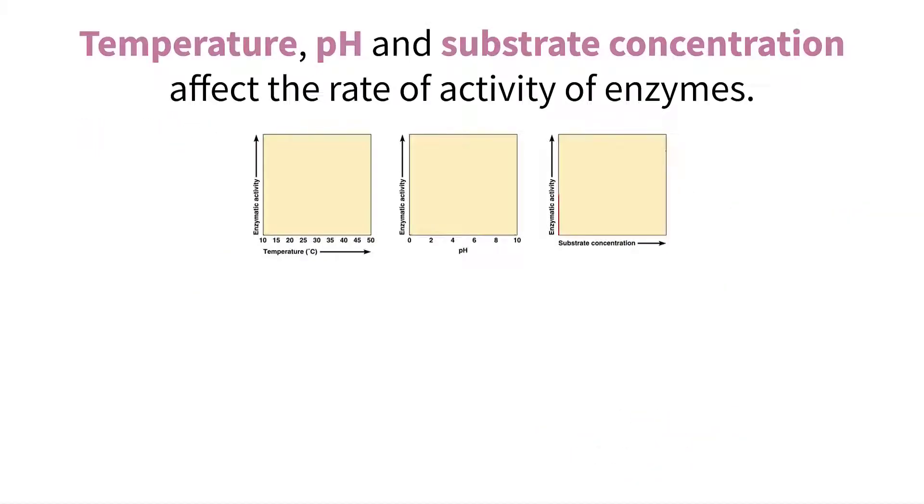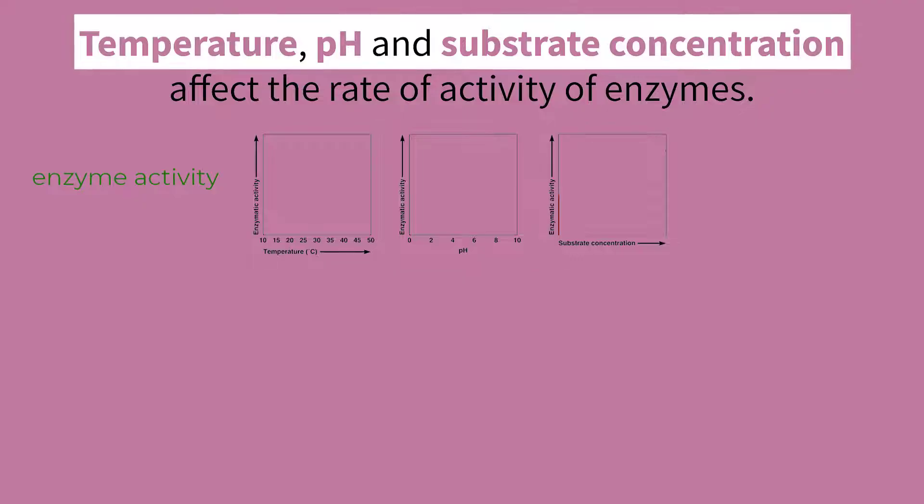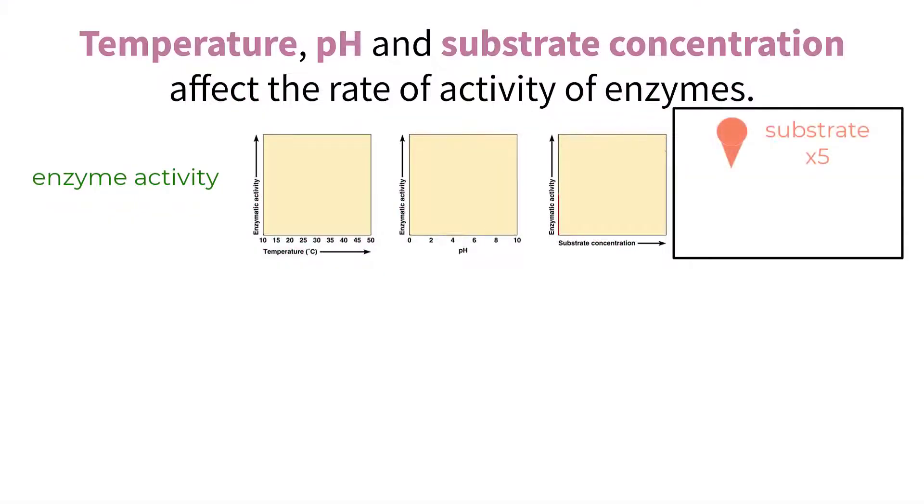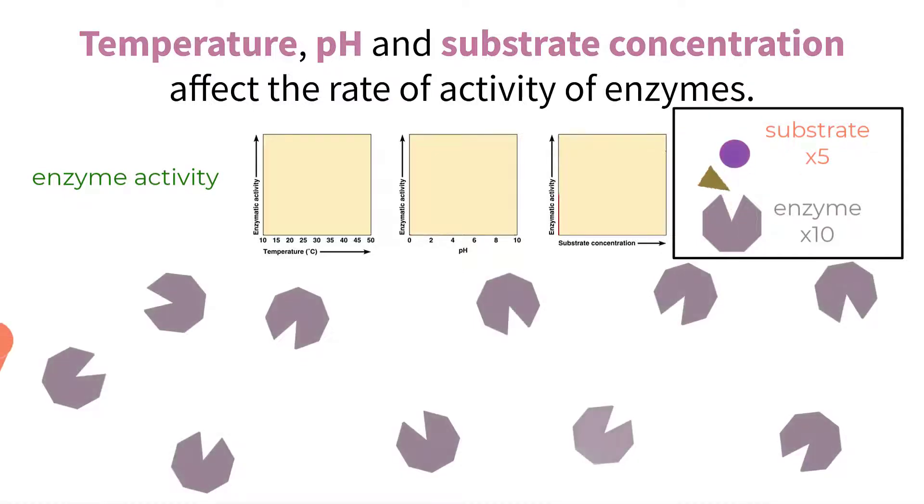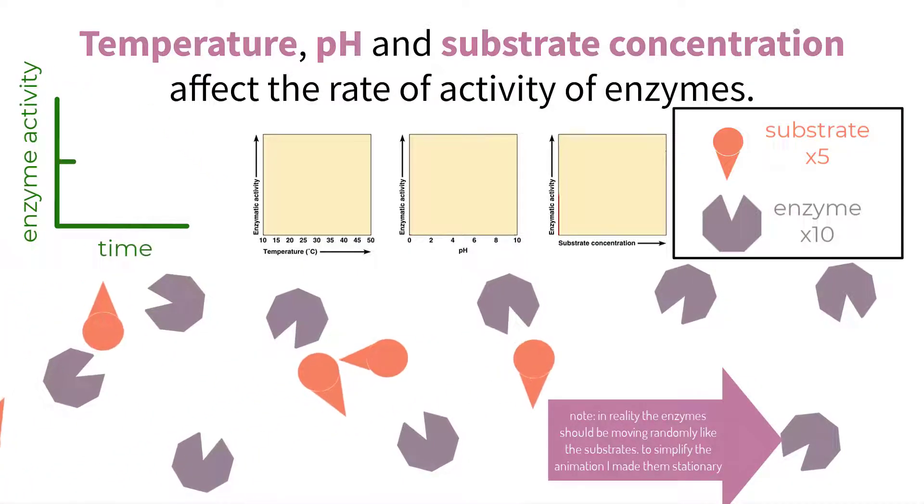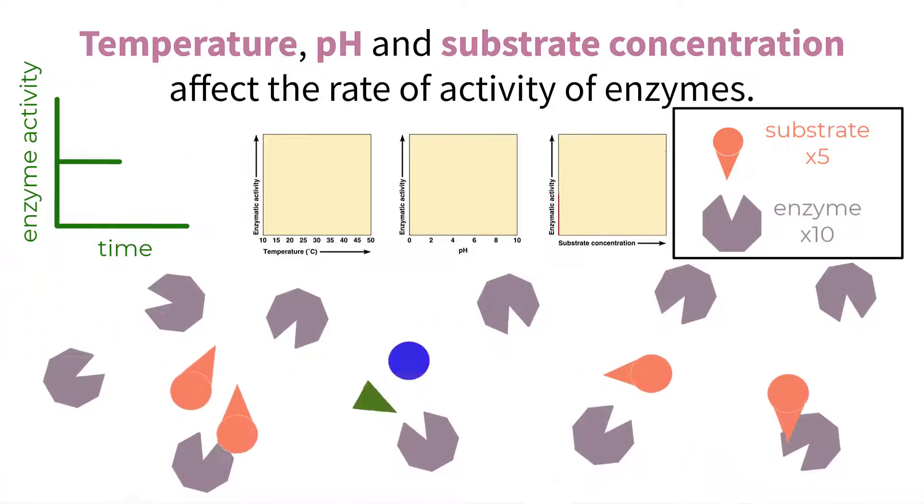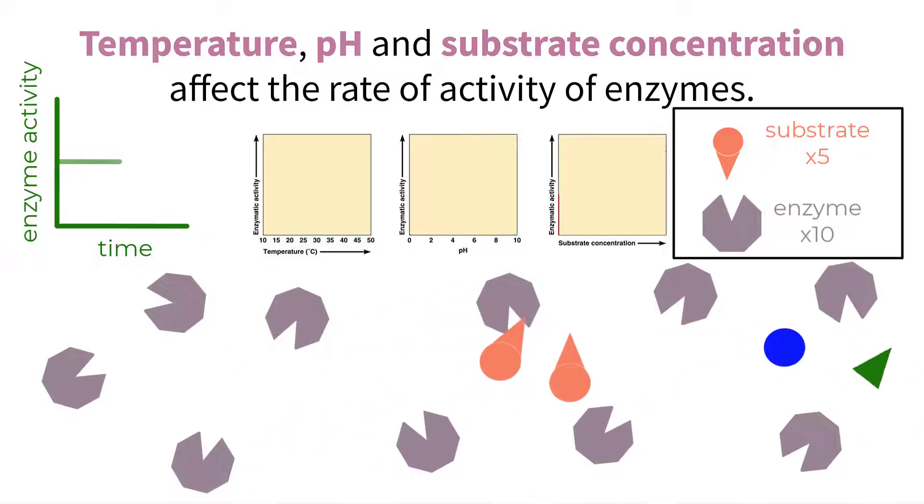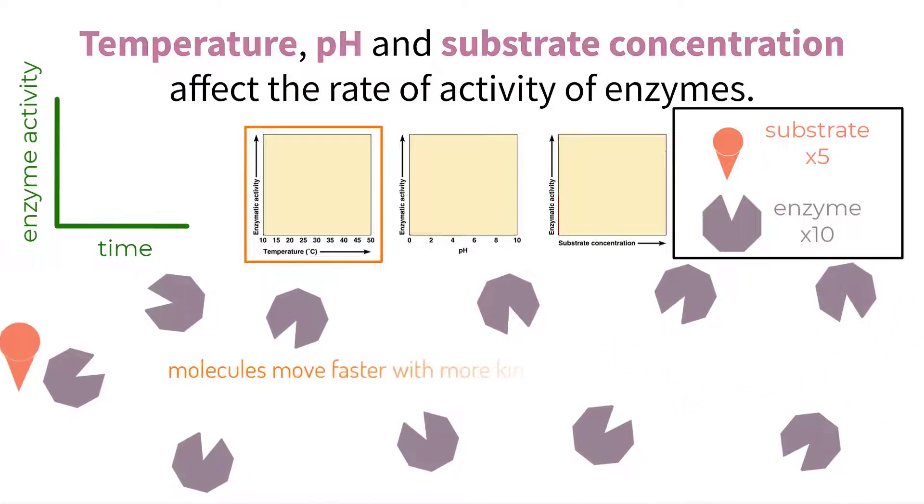Enzymes work to catalyze reactions and the speed at which they do this can be measured as enzyme activity. But this enzyme activity, or rate at which all of the enzymes that support a specific reaction can work, can be affected by a few things. Let's say we have this example of five of the same substrates and ten of the same enzymes, all of which can catalyze the reaction of this particular substrate. And right now the total rate of enzyme activity is, let's say, about half of an arbitrary maximum value, so things are working well but they could be more efficient.